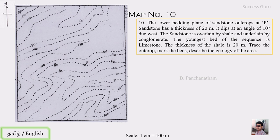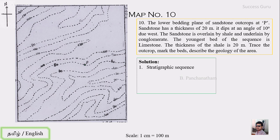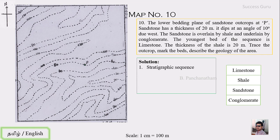Here is the question. On the left-hand side there is a map with point P, which shows the outcrop of the lower trace of sandstone, along with the north arrow and scale. The first step is to create a stratigraphic sequence. Point P is the lower trace of sandstone; the sandstone is overlain by shale and underlain by conglomerate; limestone is the youngest and goes at the top. The sandstone and shale each have a given thickness of 20 meters. The top and bottom beds have no thickness. This gives us the younging sequence direction.